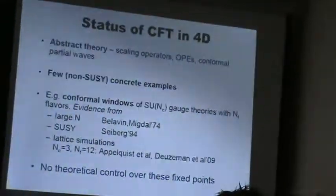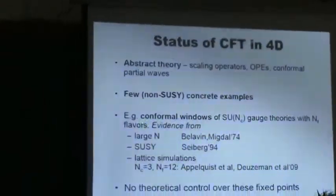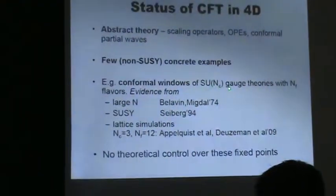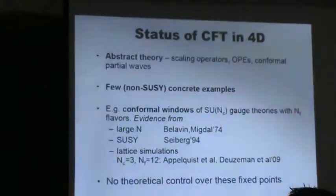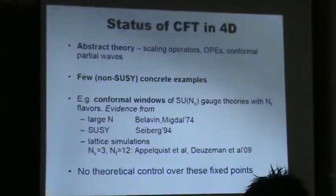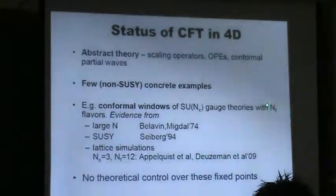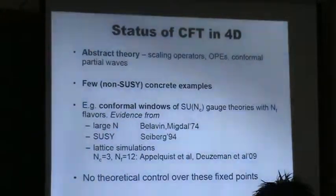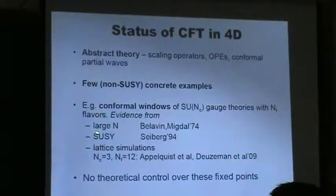We do have some examples and some hope that these theories exist. For instance, if you take a gauge theory with a certain number of colors and a certain number of flavors such that it's asymptotically free in the UV, then there is a conformal window for this theory. For a certain number of flavors, the theory, instead of confining in the infrared, is going to flow to an infrared conformal fixed point.